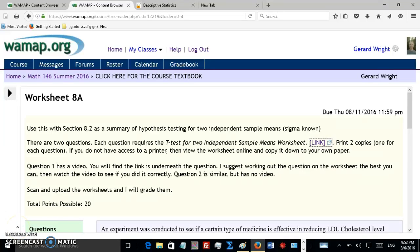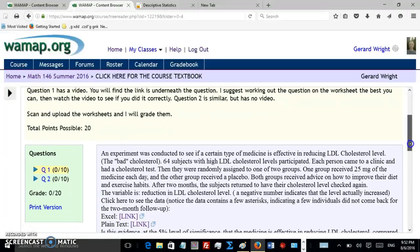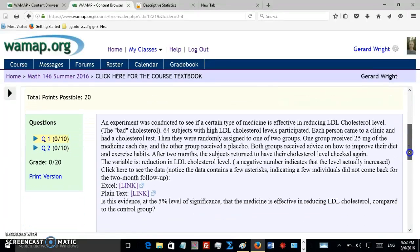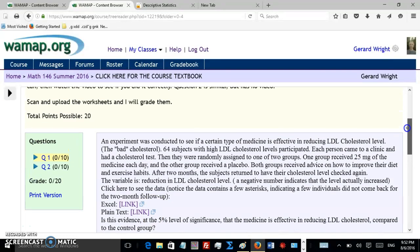Hello, this is the example for worksheet A. This is the t-test for two independent sample means. Here's the question down here. To save time I'm not going to read the question, you can read it yourself. But I want to just point out that there's links to the data, either an Excel sheet or plain text. Either one, just download it and do your calculations.